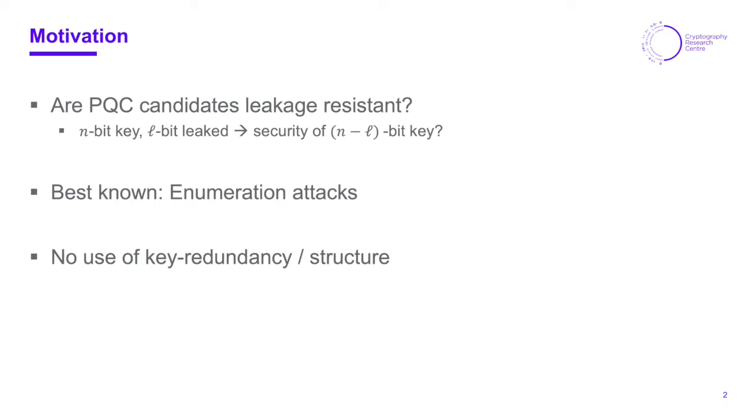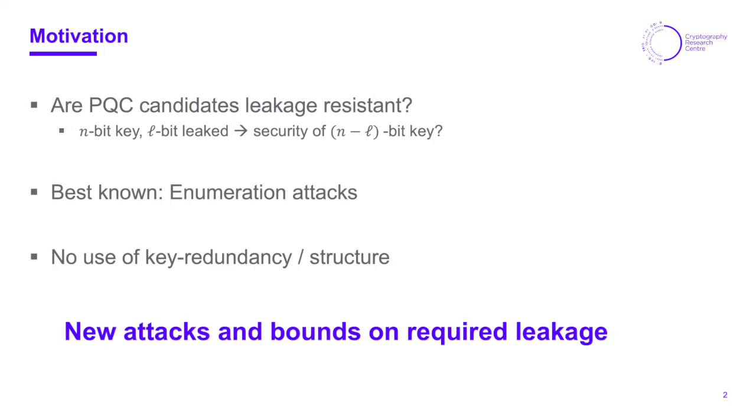So why do we ask this question about post-quantum candidates? Because the best-known attacks are enumeration based, meaning they enumerate the missing key bits and therefore strongly support this leakage resistance belief. They do not exploit any key redundancy, key structure or public-private key relations. In this work we give new attacks that actually heavily exploit those things and using our attacks we give new bounds on the required leakage for full key recovery.